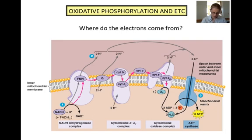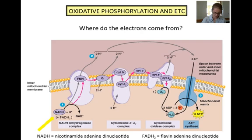The electrons that flow down the chain are shuttled to the beginning of the chain by electron carrier molecules. These electron carrier molecules are known as NADH and FADH2. At this time, you should pause this video and watch the animation on the electron transport chain that can be found on the portal.